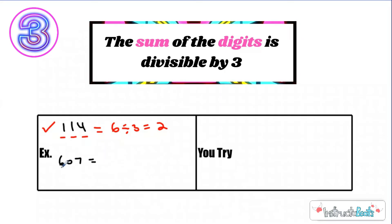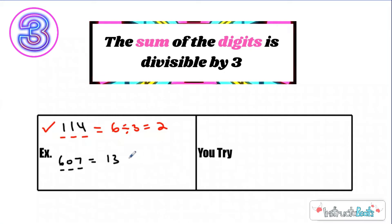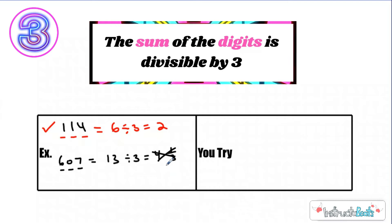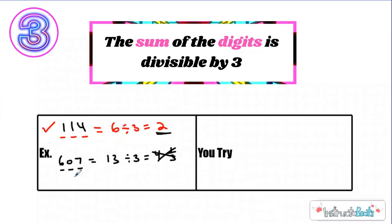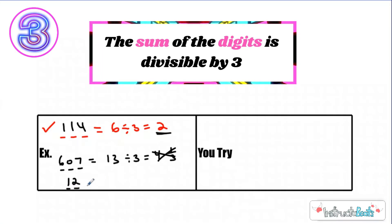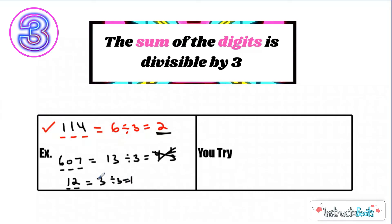Let's try 607. If we add up the digits: 6 plus 0 is 6, plus 7 would be 13. 13 is not divisible by 3 because 13 divided by 3 gives you 4 with a remainder of 1. So 607 is not divisible by 3 — no remainders allowed. Let's also check 12: if you know your basic facts, 4 times 3 equals 12. Adding the digits, 1 plus 2 equals 3, and 3 divided by 3 is 1. Even the simple ones you already know follow this rule.